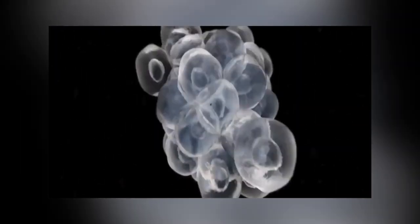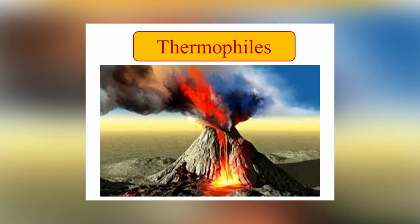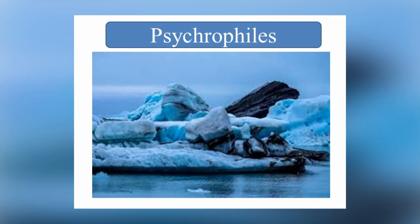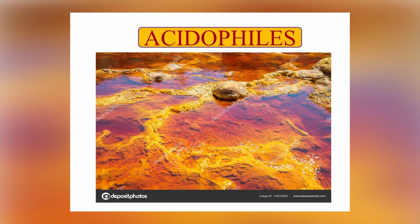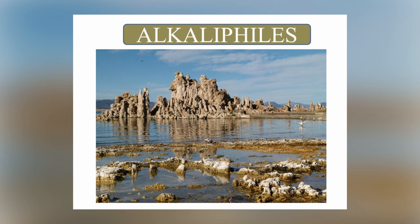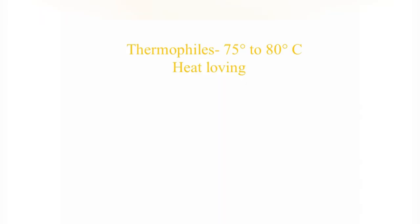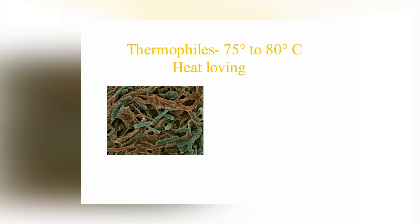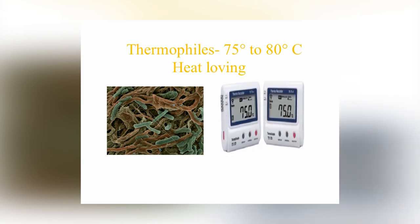Most of the members in this group come under the domain Archaea. These include thermophiles, psychrophiles, halophiles, acidophiles, and alkaliphiles. The microorganisms that prefer temperatures above 55 degrees Celsius and can tolerate up to 75 to 80 degrees Celsius are thermophiles.